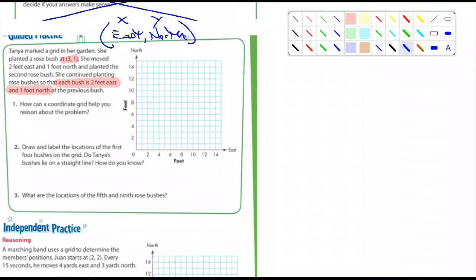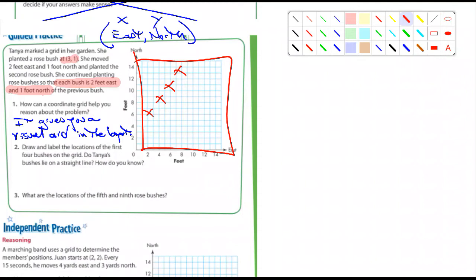So then it says she moved two feet east and one foot north and planted a second rose bush. She continued planting rose bushes so that each bush was two feet east and one foot north of the previous bush. So it says, how can a coordinate grid help you reason about the problem? I'm not sure what answer they're looking for, but if you were to make a grid as they've done for us here, I would say it gives you a visual aid in the layout. Now, in other words, you could look and see on a piece of paper what it's going to look like. So, answer number one for you.